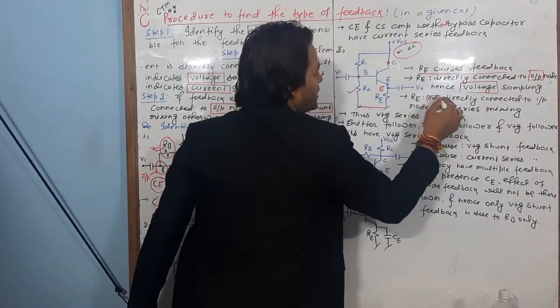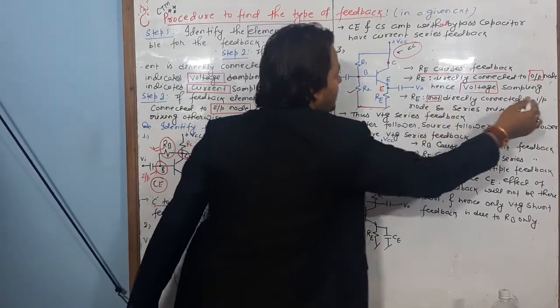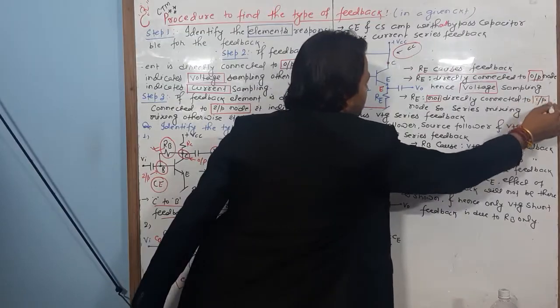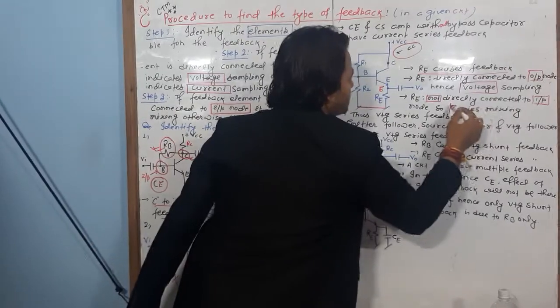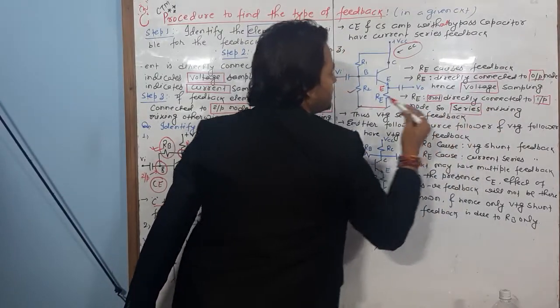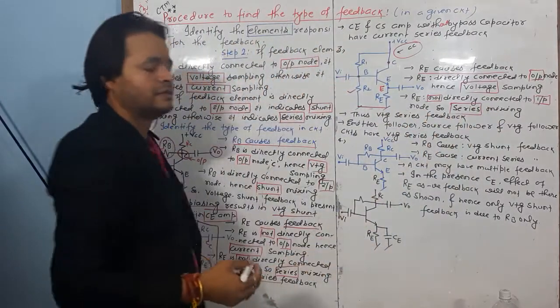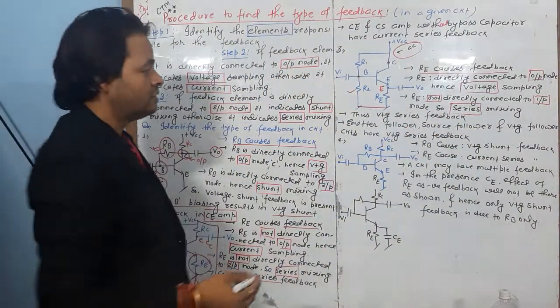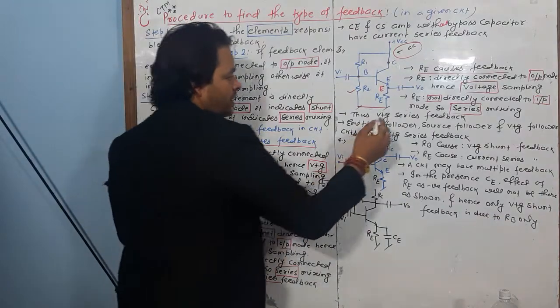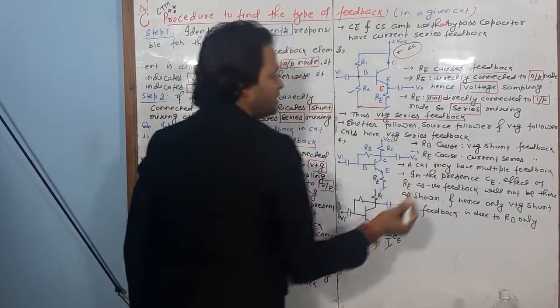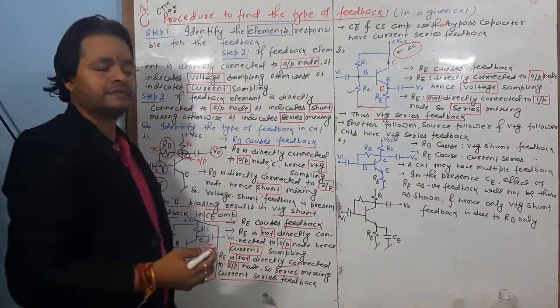RE is directly connected to the output node — so that is voltage sampling. But RE is not directly connected to the input — it is connected through R2 — so that indicates series mixing. Therefore, the feedback type is voltage series feedback.